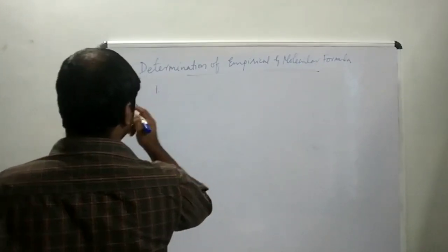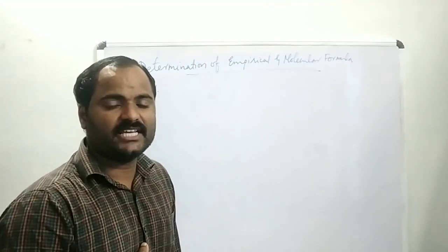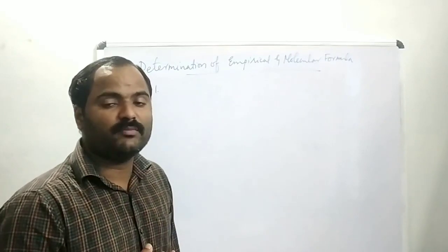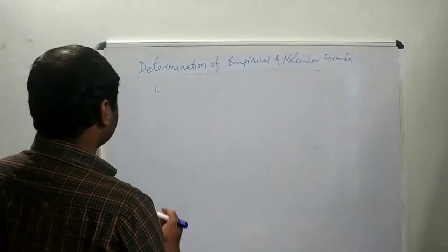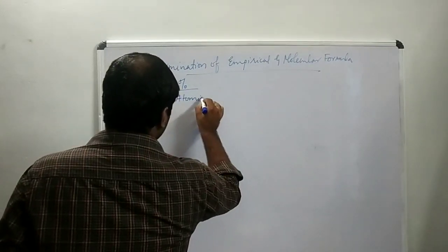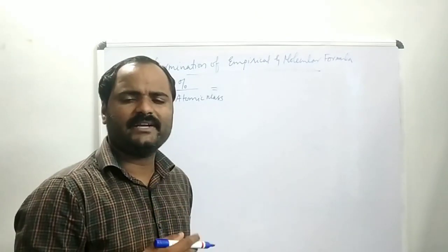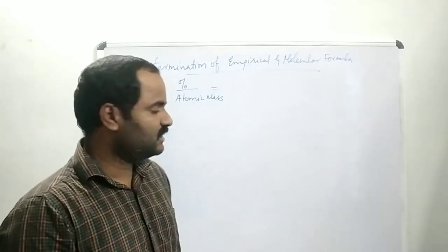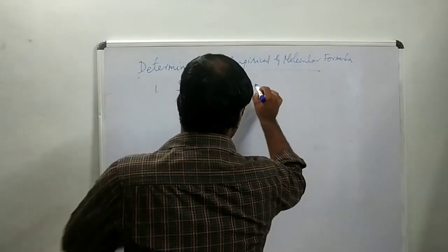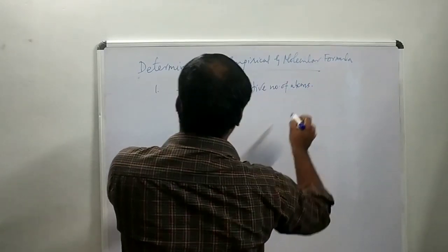In the first step, if percentage composition is given, you divide the percentage composition by atomic mass. This will give you the relative number of atoms.